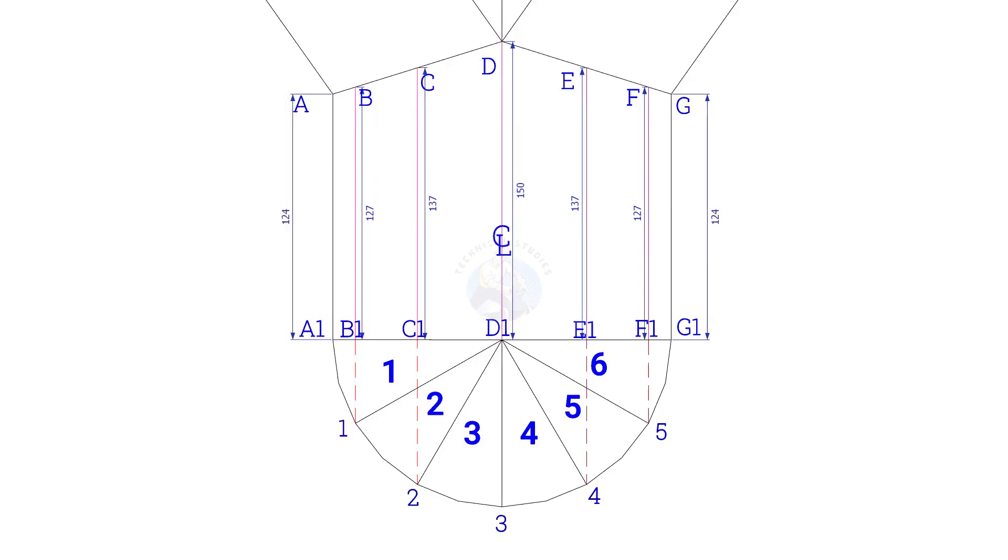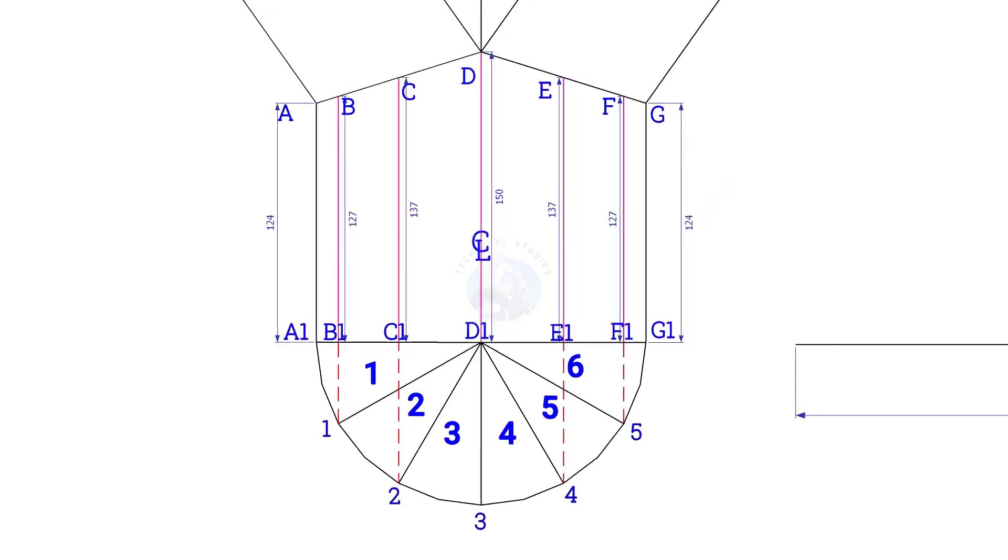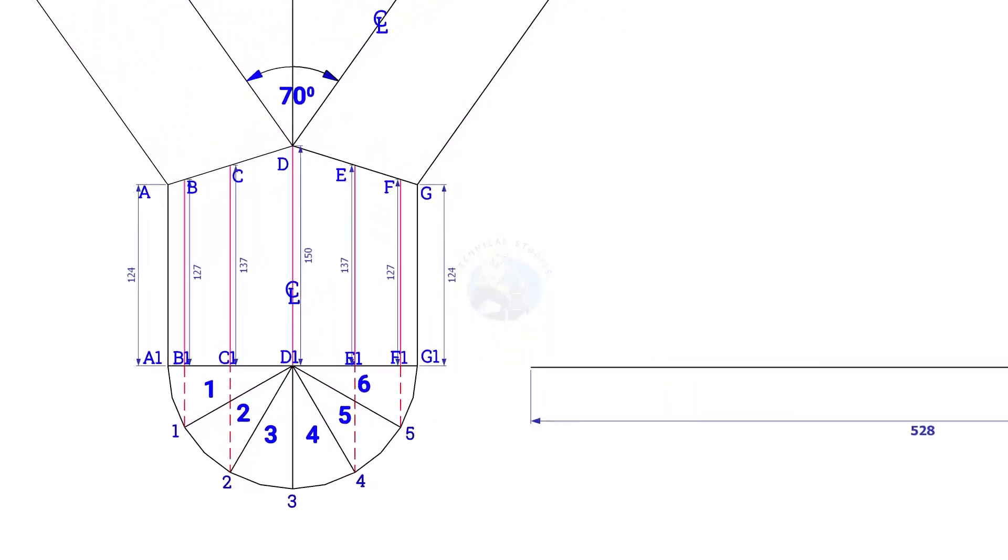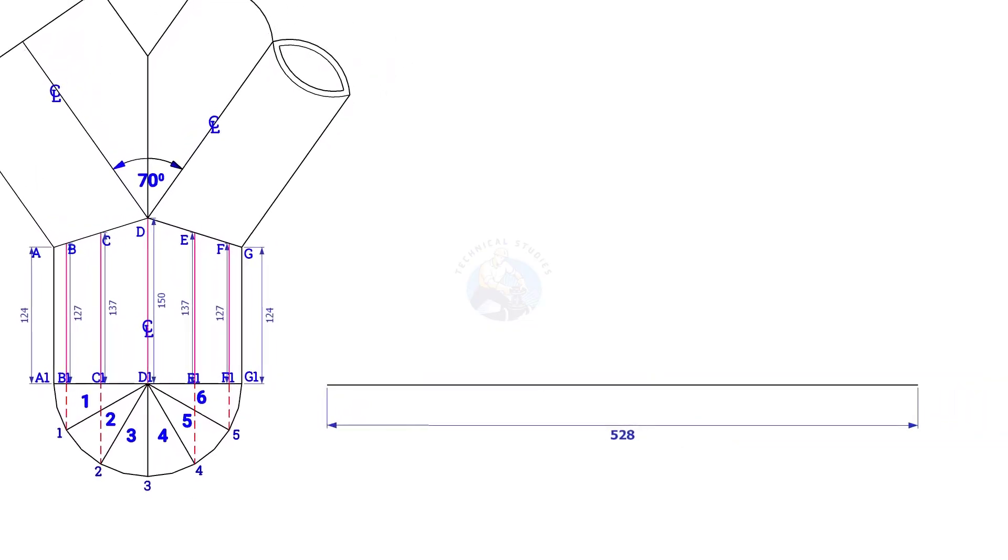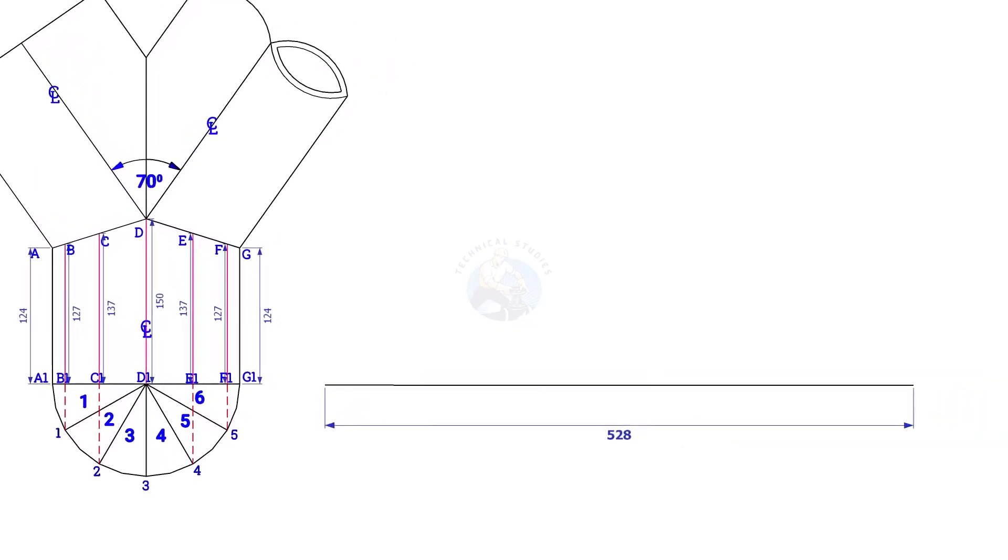The circumference is nearly 528 mm. Draw a 528 mm long line. Since we divided the half circle into six parts, divide the line into 12 equal parts. 528 divided by 12 is 44, so the length of each segment is 44 mm.